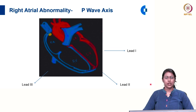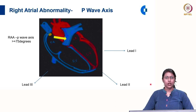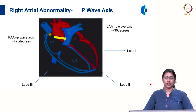In right atrial abnormality, there is a stronger right atrial vector and a normal left atrial vector. This causes the P wave axis to shift clockwise, and the P wave axis will be more than plus 75 degrees. In left atrial abnormality, there is a stronger left atrial vector, which causes the P wave axis to shift anti-clockwise, and the P wave axis is less than plus 30 degrees.